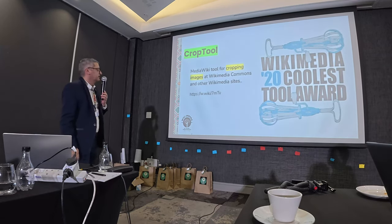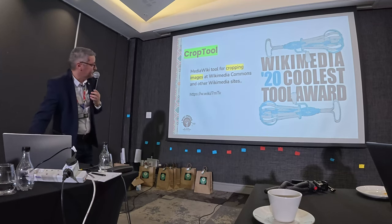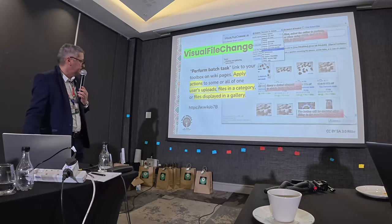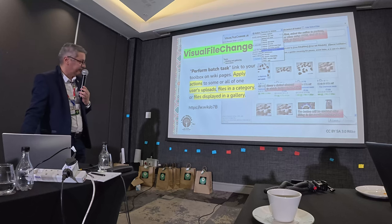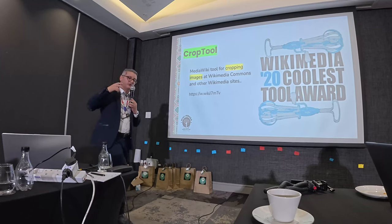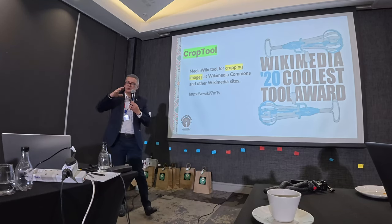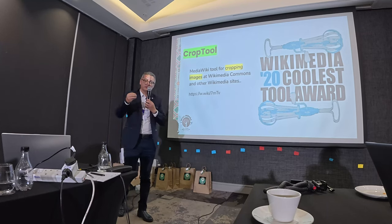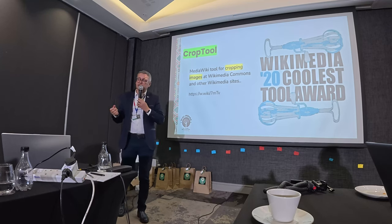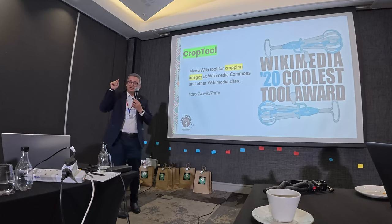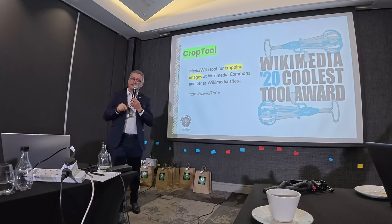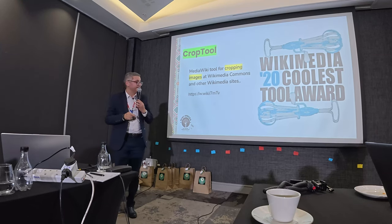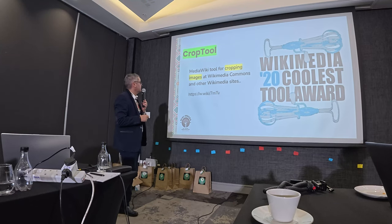The third gadget is the Crop Tool. Some images you upload to Wikimedia Commons — you only want part of them. It's possible to crop images online using this tool without downloading the file or using separate software. You just select and crop your image directly in Wikimedia Commons. It won the Coolest Tool Award for 2020 — it's a MediaWiki tool for cropping images on Wikimedia Commons and other Wikimedia sites.